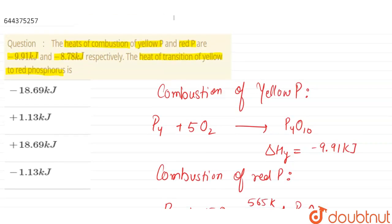Option one: minus 18.69, that is wrong. Plus 1.13, wrong. Plus 18.69, wrong. Minus 1.13 kilojoules, yes this is our answer. So option number four is the correct answer. The heat of transition of yellow to red phosphorus is minus 1.13 kilojoules. Thank you.